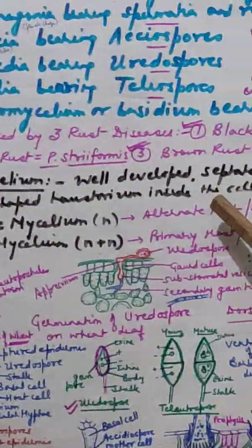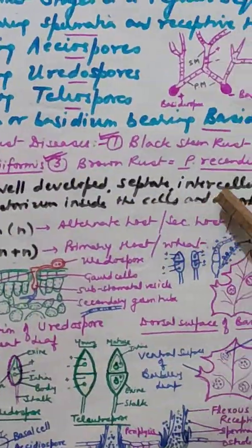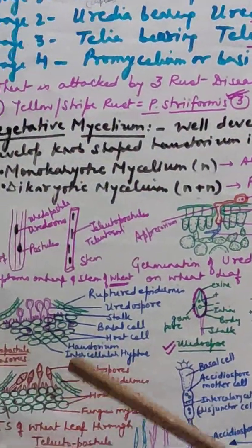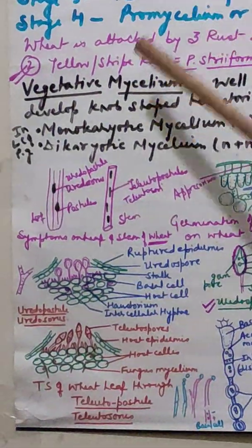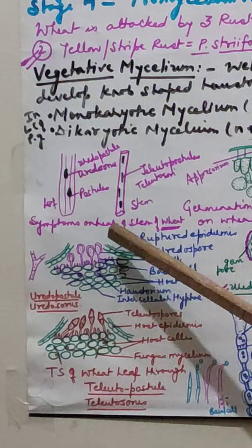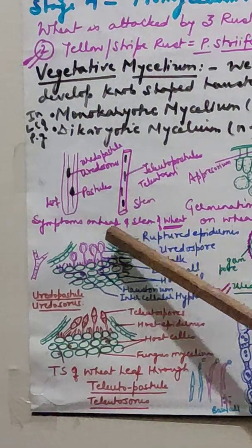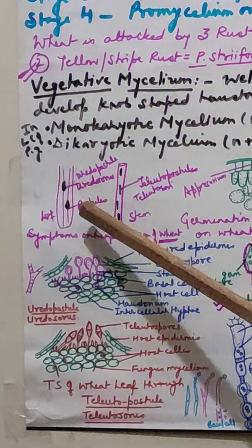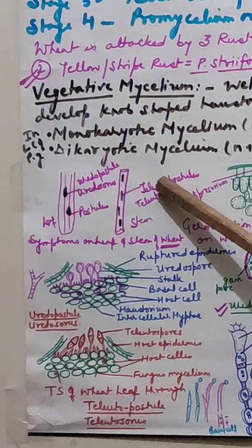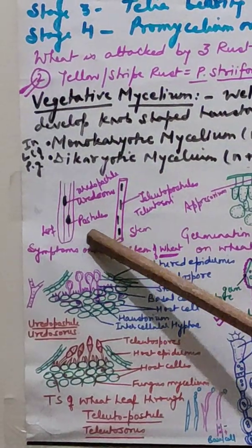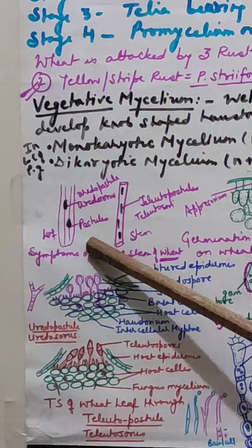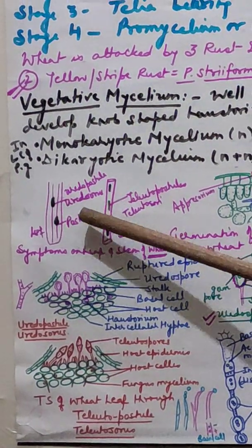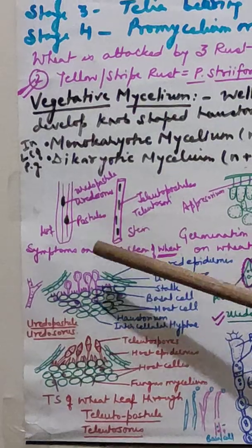The vegetative mycelium is well developed, septate, and intercellular — it creeps between the cells and forms haustoria. The symptoms of this disease appear on the wheat stem as well as the leaf, in the form of uredopustules and teleutopustules. The pustules formed on the leaf and stem are the uredopustules, while the others are the teleutopustules.